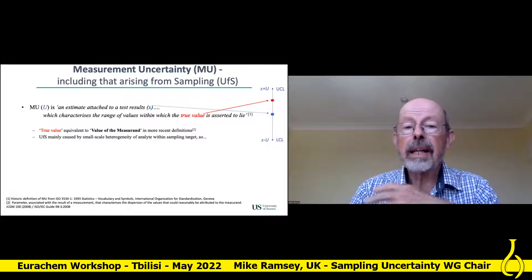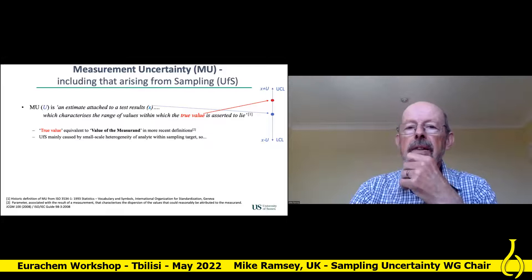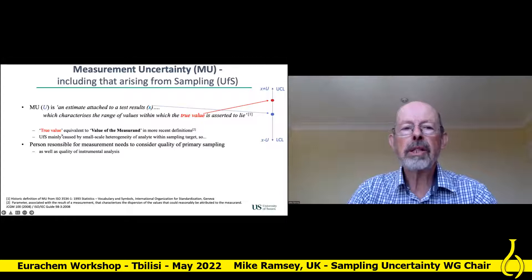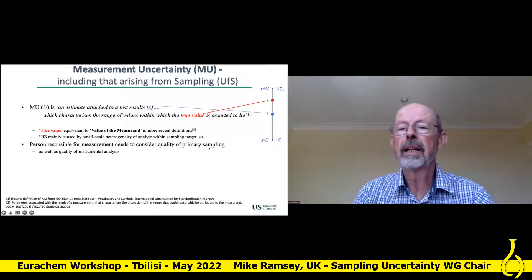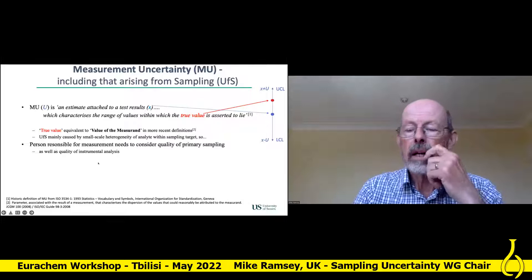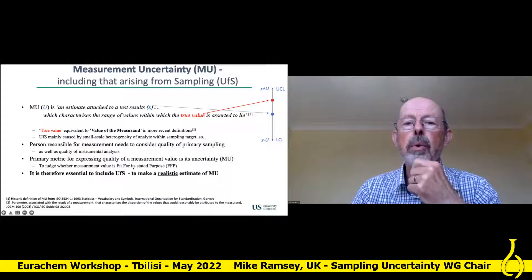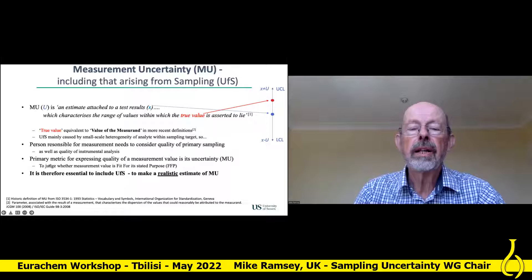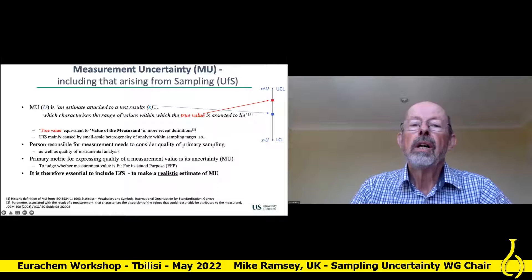The uncertainty from sampling is mainly caused by the small-scale heterogeneity of the analyte within the sampling target — so it's inescapable. The take-home message is that the person responsible for the measurement needs to consider the quality of the primary sampling. We can no longer separate the two out and say that's nothing to do with me. It has to be someone's responsibility. It's not just the chemical analysis.